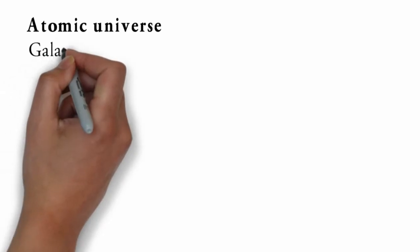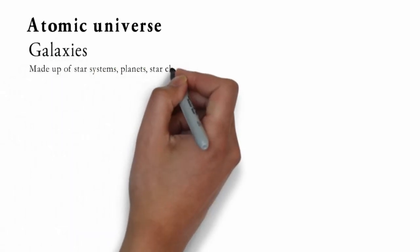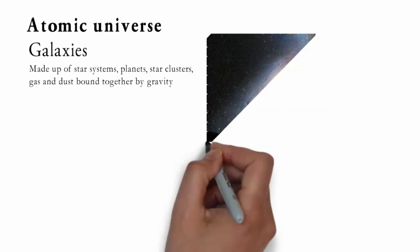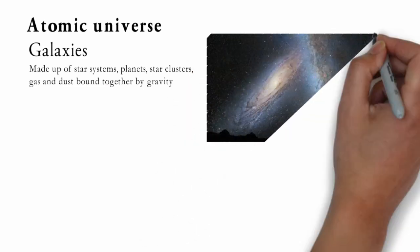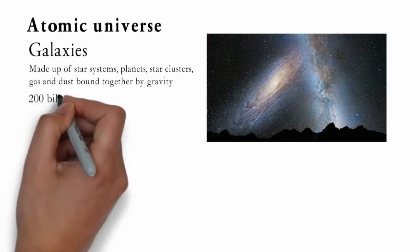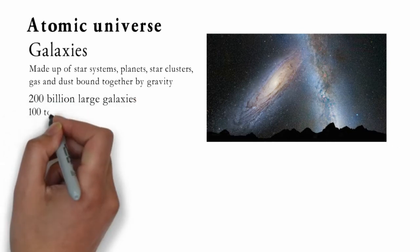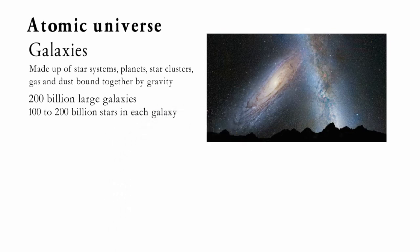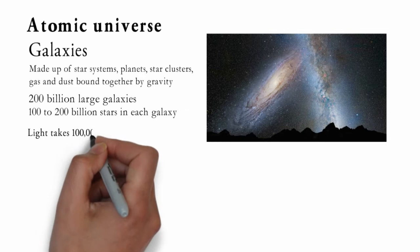Galaxies are made up of star systems, planets, star clusters, gas and dust, bound together by gravity. There are about 200 billion large galaxies in the observable universe, each containing about 100 to 200 billion stars. Galaxies are generally categorized as elliptical, spiral and irregular shaped.